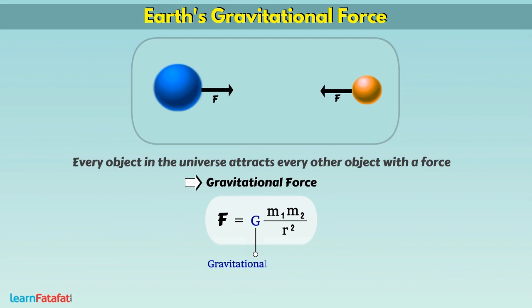Where G is the gravitational constant having value G is equal to 6.67 multiplied by 10 raised to the power minus 11 Newton meter square per kilogram square.